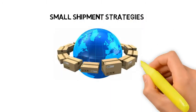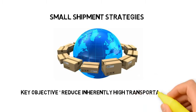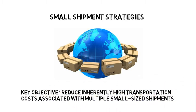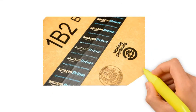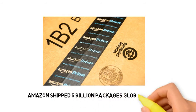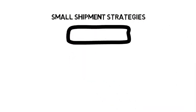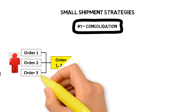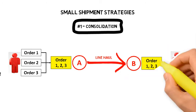The key objective of small shipment strategies is to reduce the inherently high transportation costs associated with multiple small-sized shipments. Amazon is an example of a small shipment business — in 2017, it shipped 5 billion packages to customers across the globe. There are two main small shipment strategies. Number 1 is consolidation: at the origin point, a shipper always tries to consolidate multiple small shipments going to the same consignee or customer into one larger order before sending it to a destination by line haul.